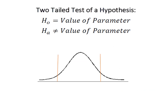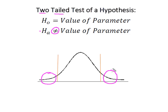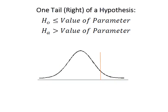The direction and the number of tails in your test is determined by the value or the sign in HA. The opposite of 'equal to' is 'not equal to,' and because we have 'not equal to,' that gives us a two-tailed test — the actual value could be smaller or it could be larger. This gives us a rejection region in the upper tail of the curve and a rejection region in the lower tail of the curve.